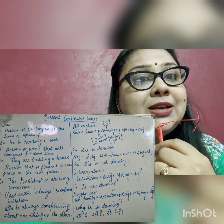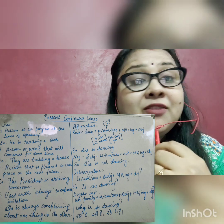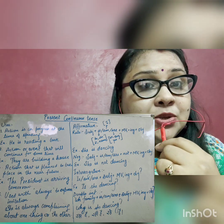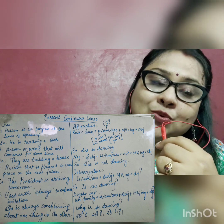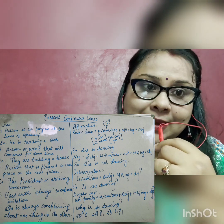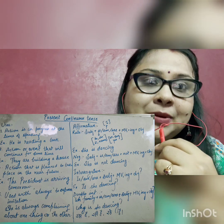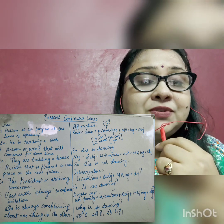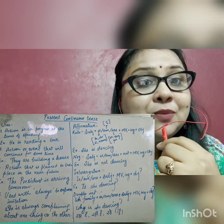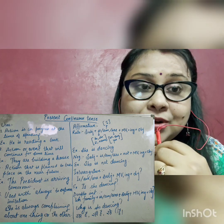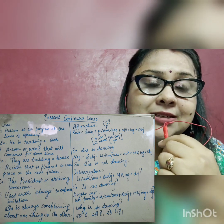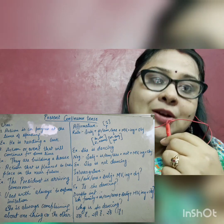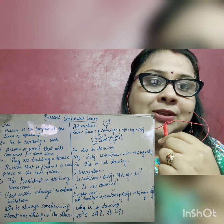Is is used with he, she, it, and a name, as I have mentioned in the picture. Am is used with I, and Are is used with you, we, and they. Please remember. And then we use the main verb's first form plus I-N-G. The ING ending is very important in Present Continuous Tense. Then you can add the object.